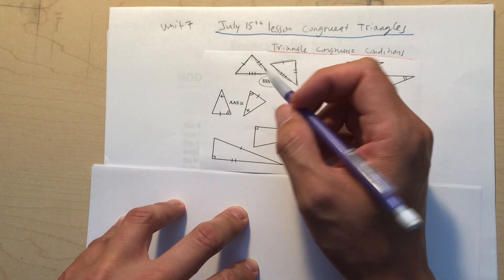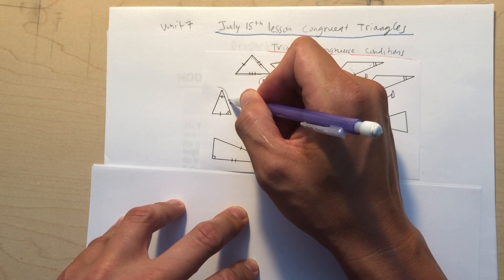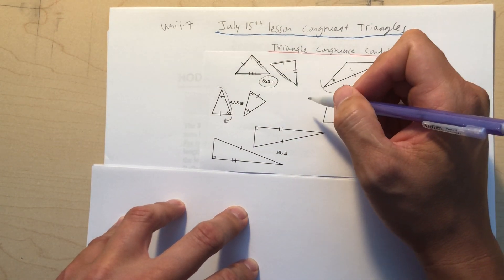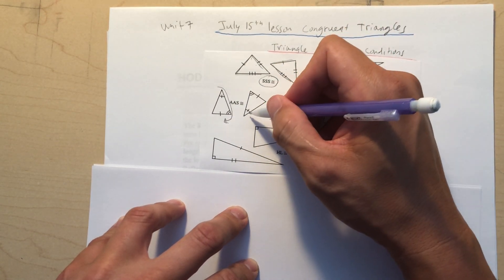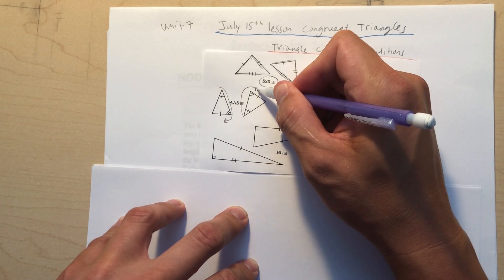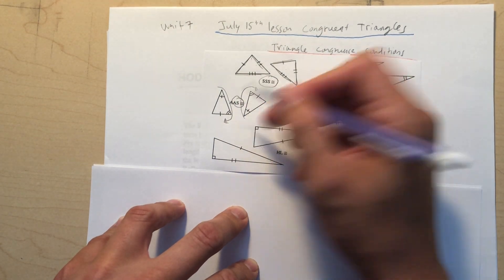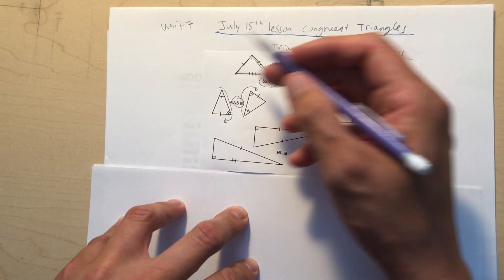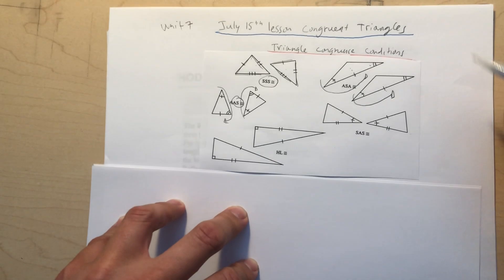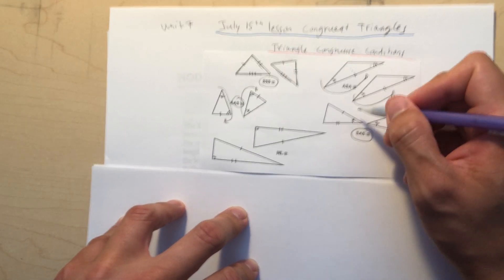It also works for Angle-Angle-Side (AAS). This one starts from one angle, goes down to another angle, then to a side. It doesn't have to flow only one way — it can flow the other way too. So angle-angle-side also proves congruence, as long as it flows consistently one way or the other.